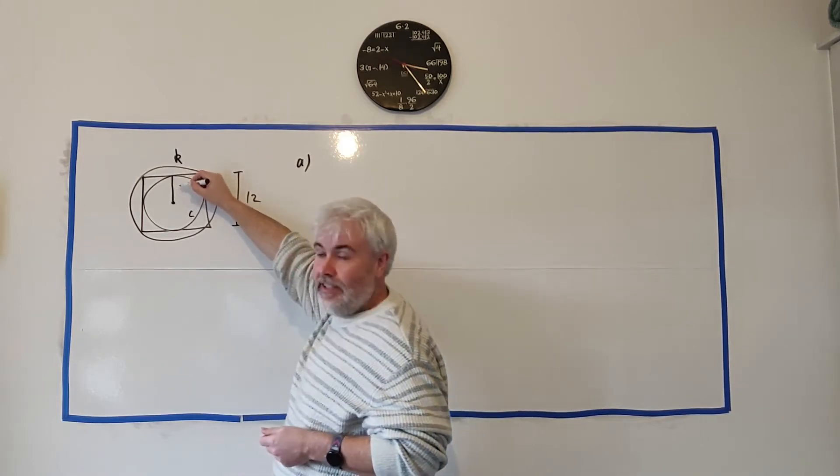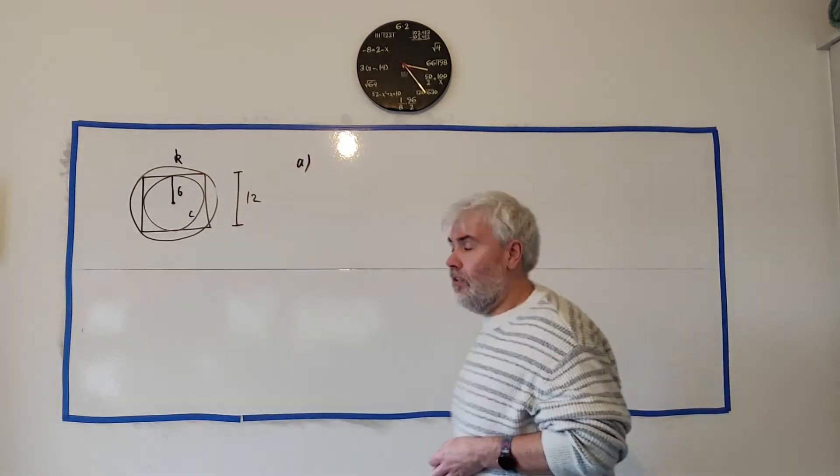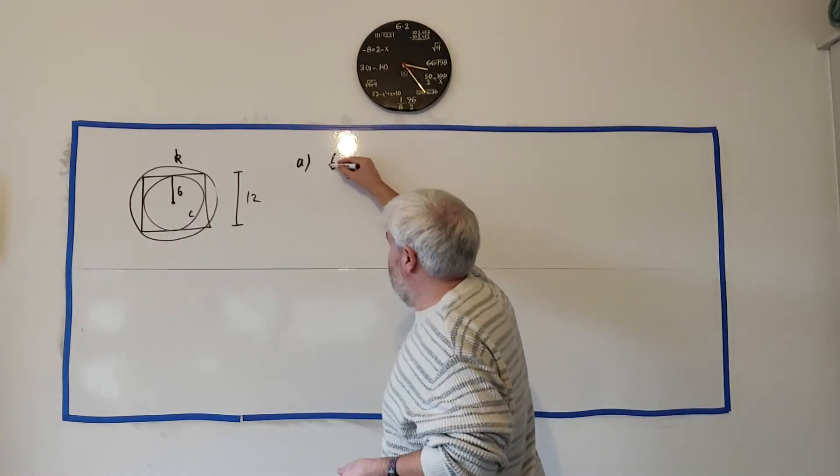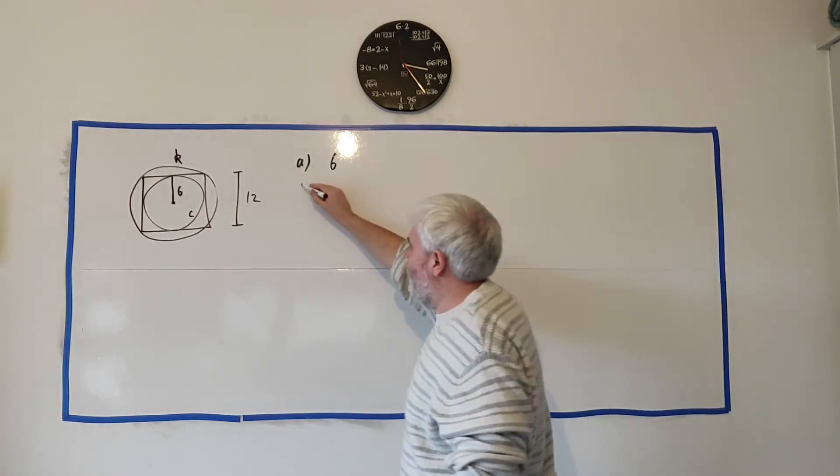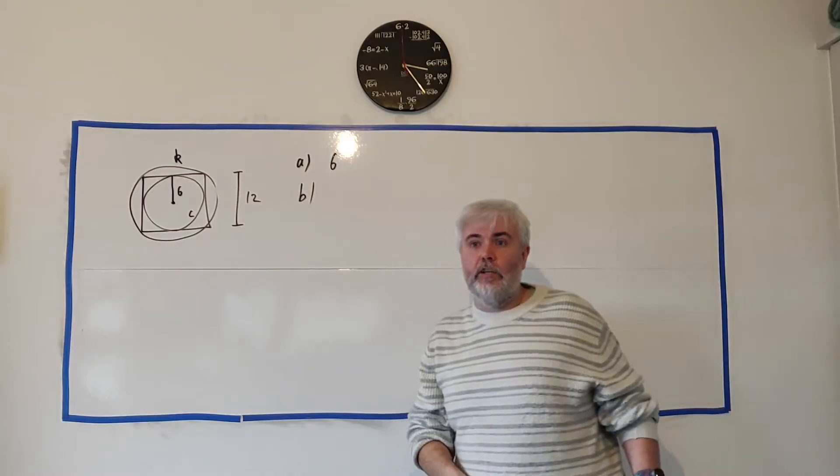So that should be the radius there. That should be 6, half of the square. Don't need to do any calculations for that one really. Just write down 6 and you will get full marks.